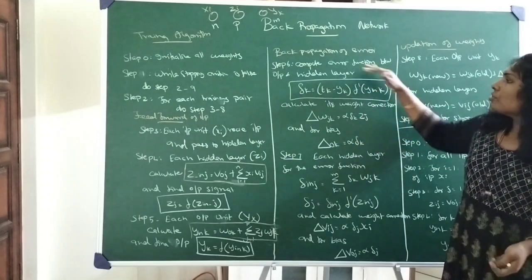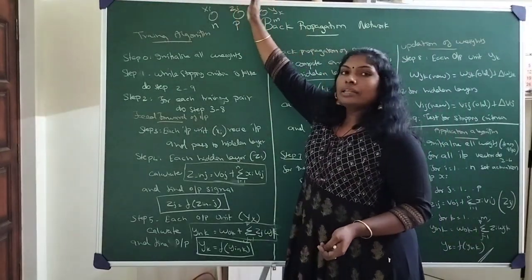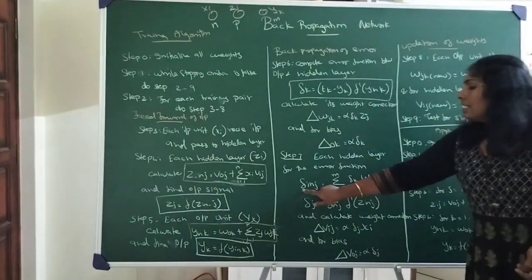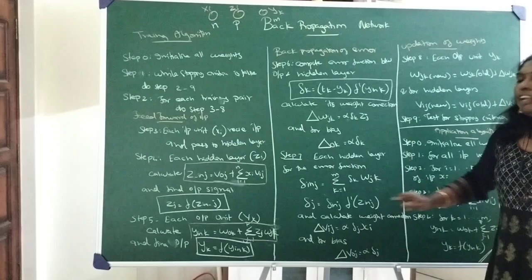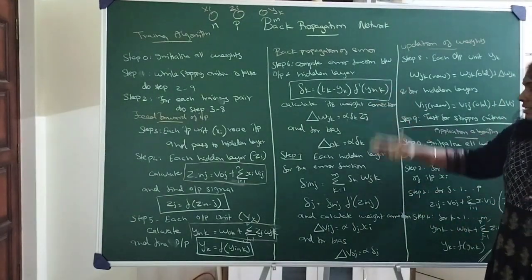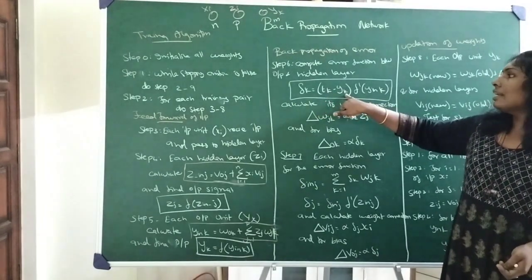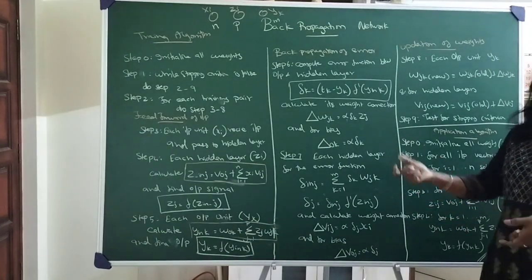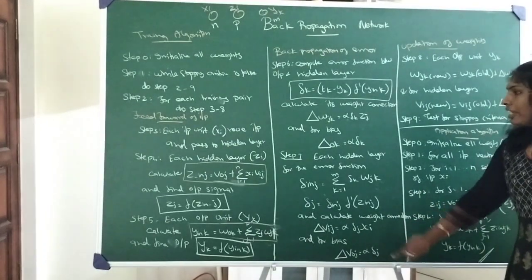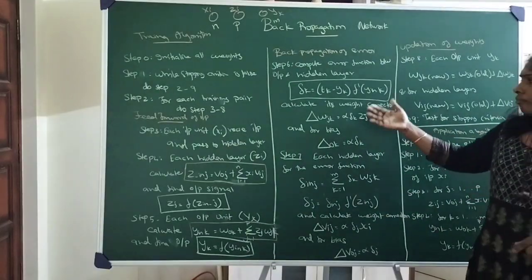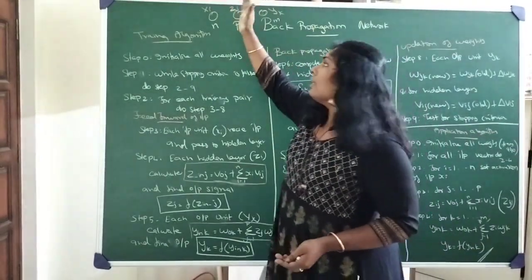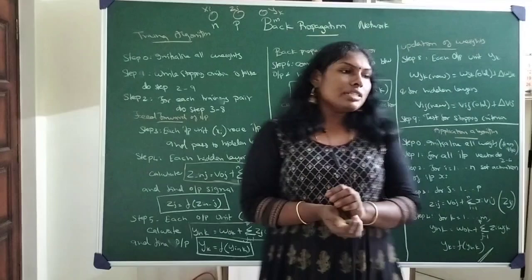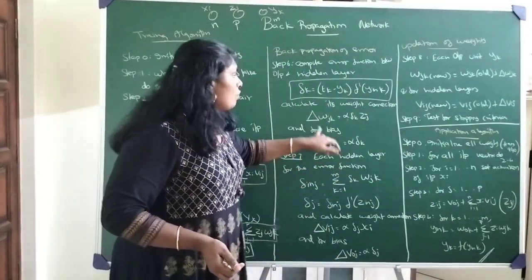This error function is computed between the output and hidden layers. For the hidden-to-input direction, there is no target for the hidden layer, so we calculate delta_in_j using a sum formula and then apply the inverse (derivative) function to get the hidden layer error delta_j. This is similar to the output layer calculation, except that since we have no target for hidden neurons, we use the propagated error. The weight correction formula for hidden-to-input weights is then calculated accordingly.